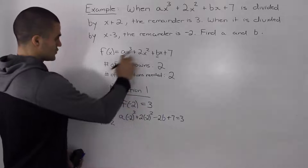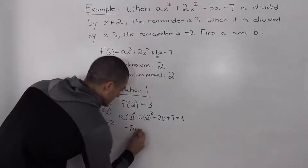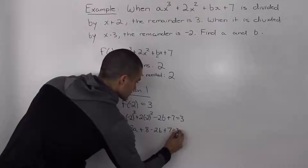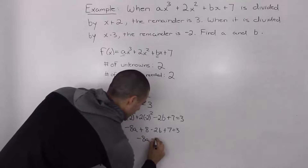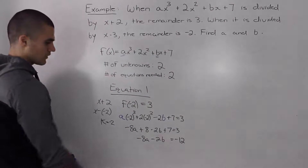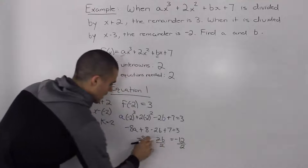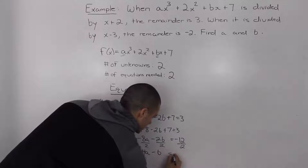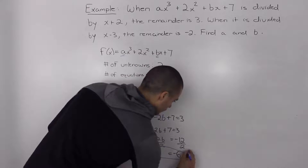Taking the dividend and plugging in negative 2 for the x values — the a and b values still stay — negative 2 to the power of 3 is negative 8, so we'd have negative 8a. Negative 2 squared is 4, times 2 is 8. Then minus 2b plus 7 equals 3. Bringing the 8 and 7 over, we get negative 8a minus 2b equals negative 12. Dividing everything by 2, we end up with negative 4a minus b equals negative 6. This is our first equation.